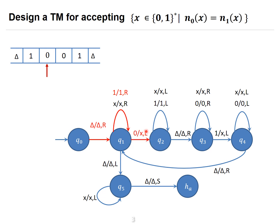By the time you are at state q2, keep moving left until you encounter delta. Read one, replace by one itself, and move one step to the left. Once you reach the delta, start searching for the next leftmost one: read delta, replace by delta, move one step to the right. You are now at q3. When the leftmost one is found, replace it by X and move one step to the left. Reading delta at q4, replace by delta and move one step to the right to return to q1.